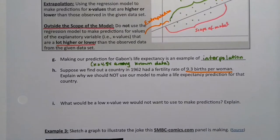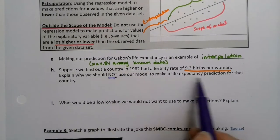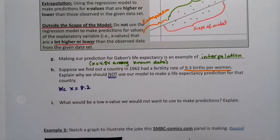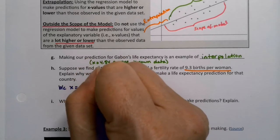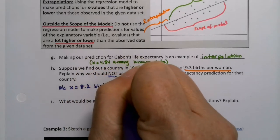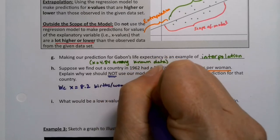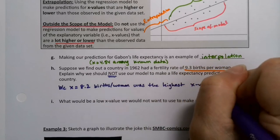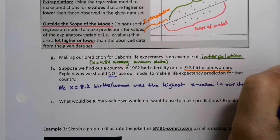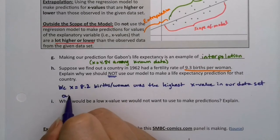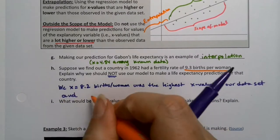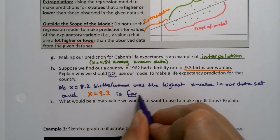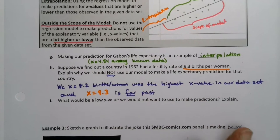And that's the question they're asking. Why would we not want to use our model to make that prediction? Because x equals 8.2, if you'll remember, was Rwanda, births per woman, was the highest x value in our data set. And x equals 9.3 is far past our known data set.